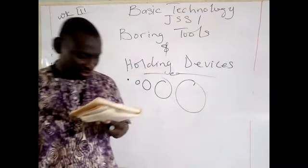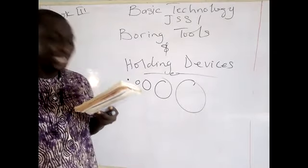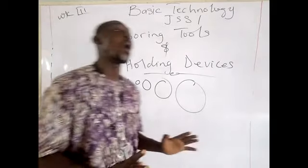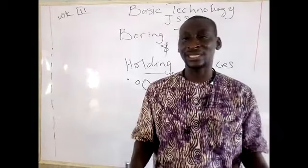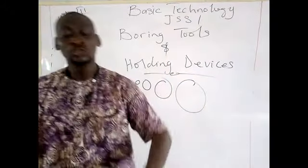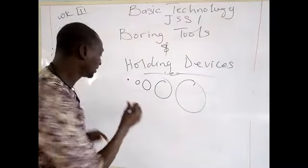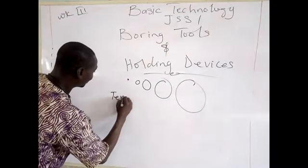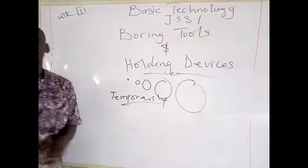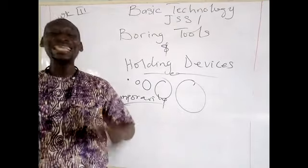The types of holding devices include: workbench, bench hook, bench vise, bench stop, G-cramp, and sash cramp. These are all what we call holding devices. A holding device is basically meant to hold a piece of job temporarily — underline the word temporarily. It makes the job neater, quicker, and easier for you.